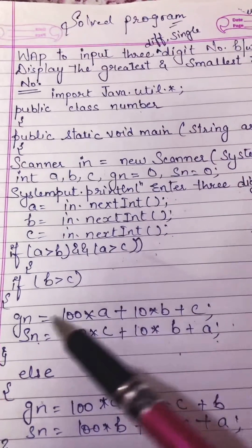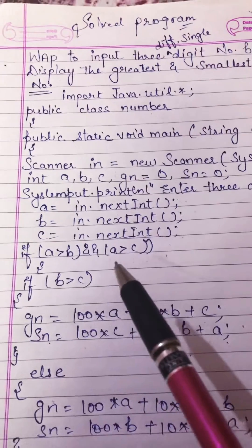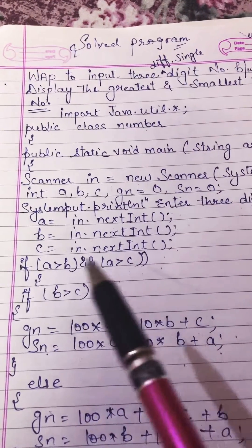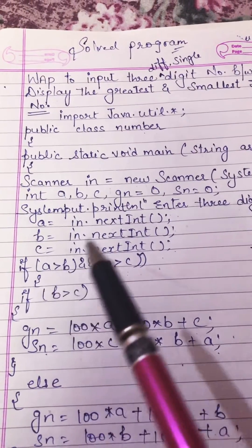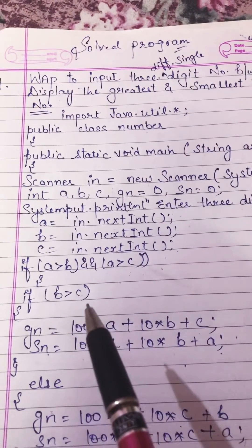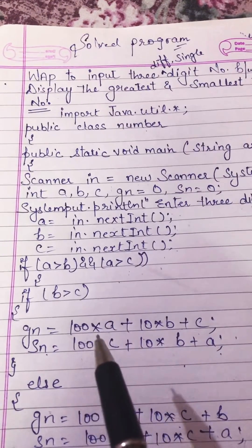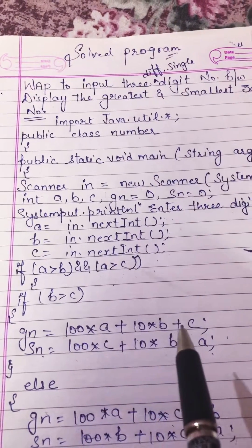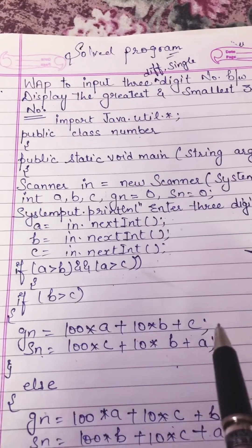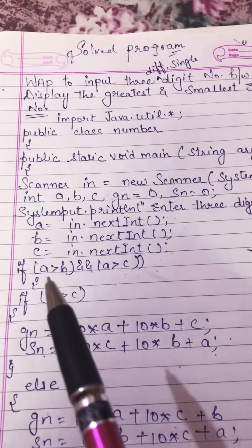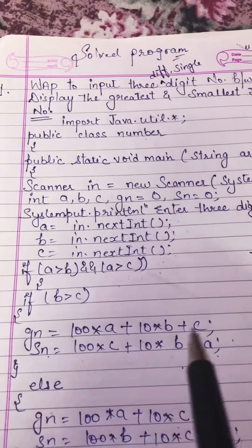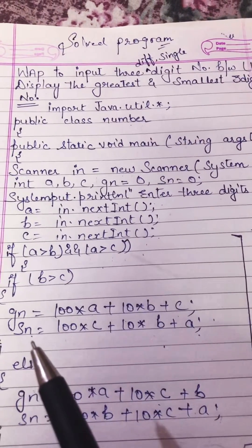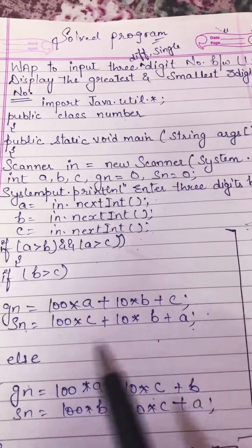Next, we are using this condition: if A is greater than B AND A is greater than C — it will give a true result when both conditions are true. If we have checked this condition, we will then check if B is greater than C. If it is true, then in the first line we use A as the hundreds place, B as the tens place, plus C as the units place. And SN for the smallest number means we need to change the places of the digits.